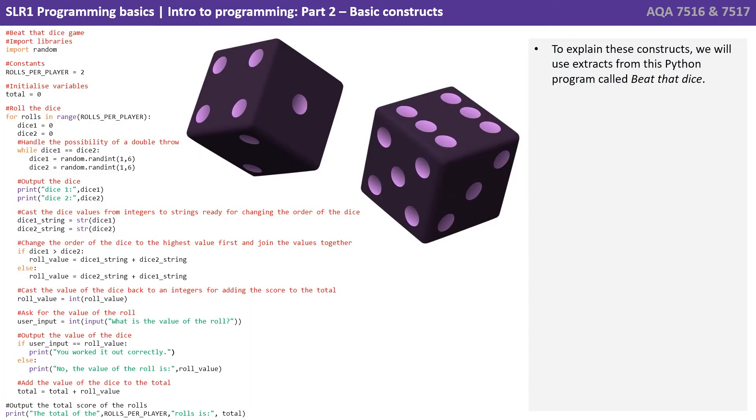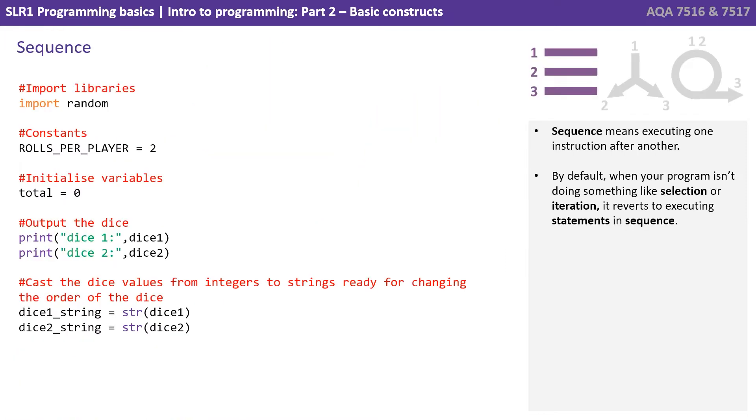To explain these constructs, we will use extracts from this Python program called Beat That Dice. Let's start by looking at sequence. Sequence means executing one instruction after another. By default, when your program isn't doing something like selection or iteration, it reverts to executing statements in sequence, one after the other.